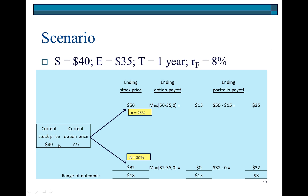We're going to use the one-period binomial lattice to show how the price of the call option is determined using the binomial model. The stock is currently worth $40. We're assuming it can either go up by 25% — that's the upside parameter — from $40 to $50, or it can go down by 20% from $40 to $32.